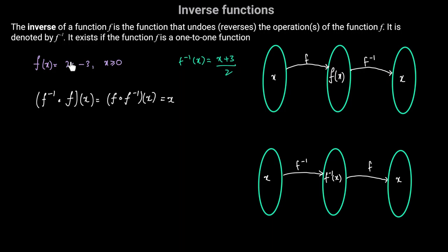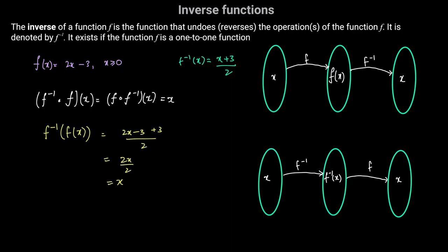We can verify these relationships by computing the composite functions. First, computing f inverse of f of x: f inverse of x equals (x plus 3) divided by 2, but now the input is f of x, which is 2x minus 3. So we get (2x minus 3 plus 3) divided by 2, which gives 2x divided by 2, equal to x. So f inverse of f of x equals x.